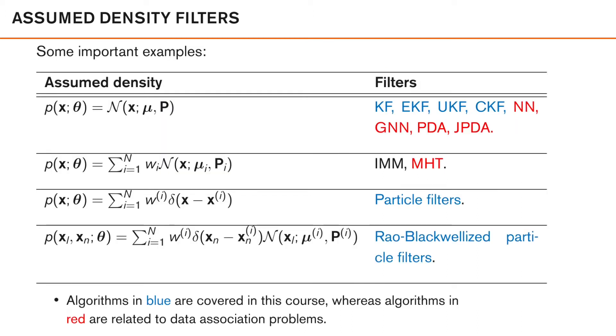This table gives a summary of different commonly used assumed densities and the filtering algorithms that use them. Our ambition here is not to go into any details regarding the different methods mentioned here, but rather to give some examples of density parameterizations that are used, starting with the far most commonly used parameterization, and that is the Gaussian density. In the scalar case, it could look something like this, and the parameters that we need to find is the mean mu and the covariance p of this density. Examples of filters on this form is the Kalman filter and the extended Kalman filter that we have studied so far.